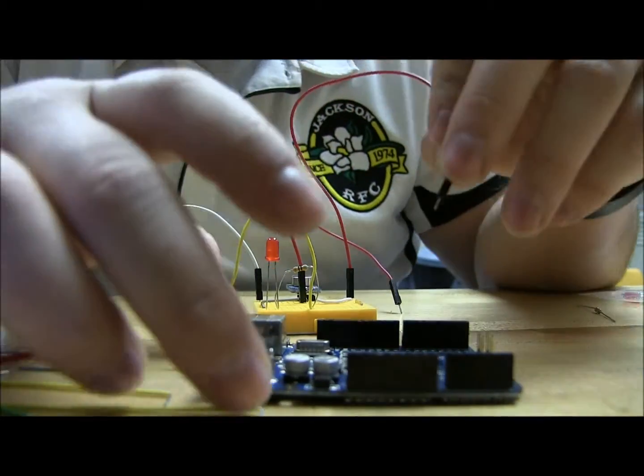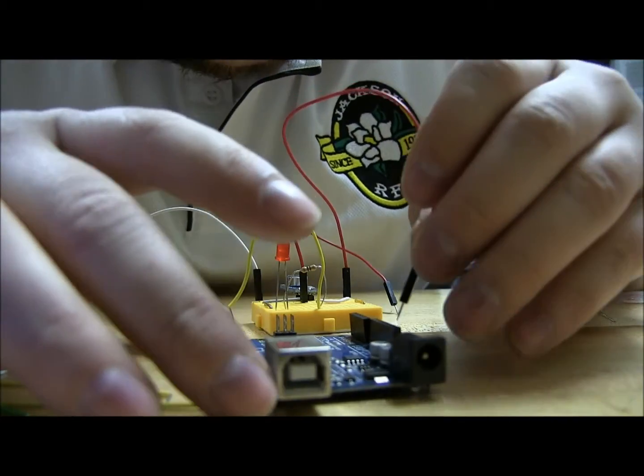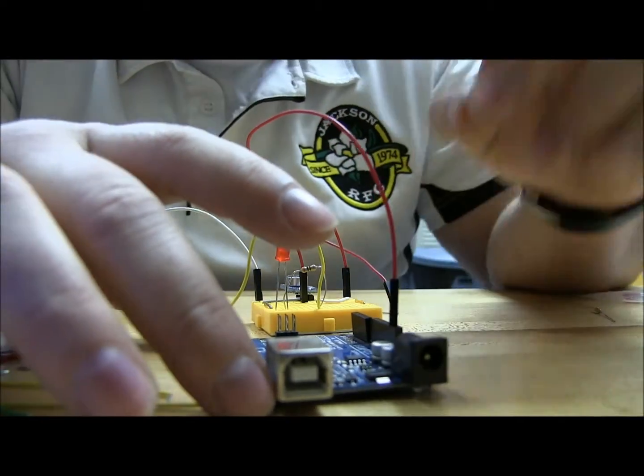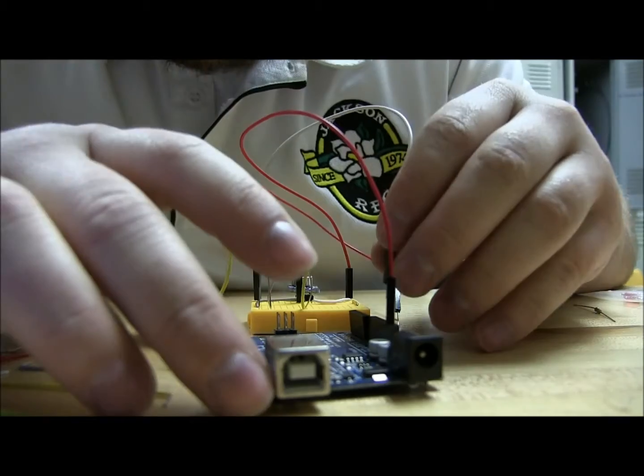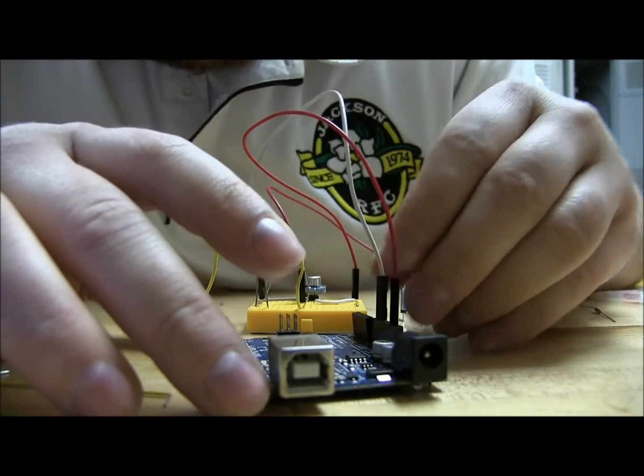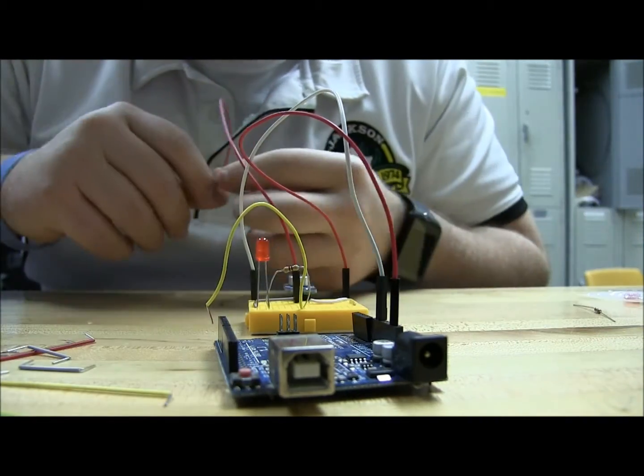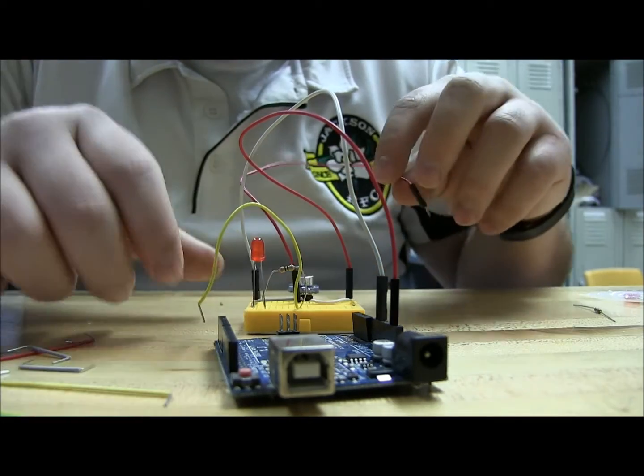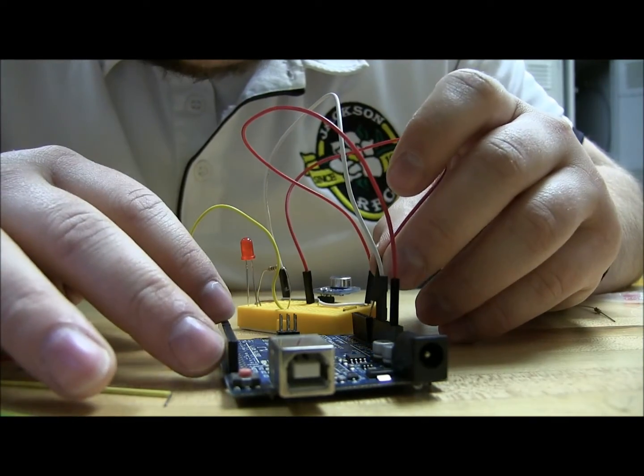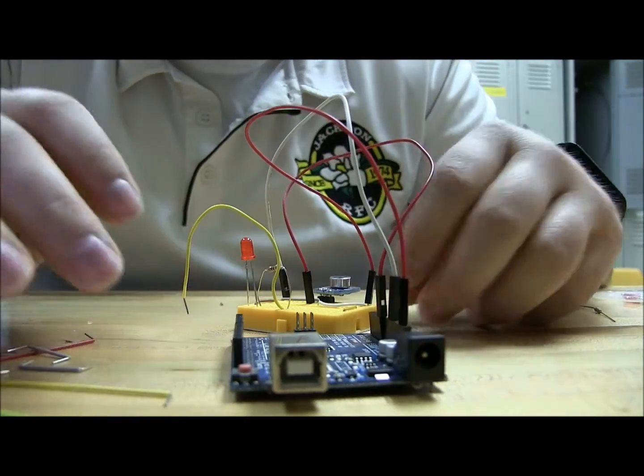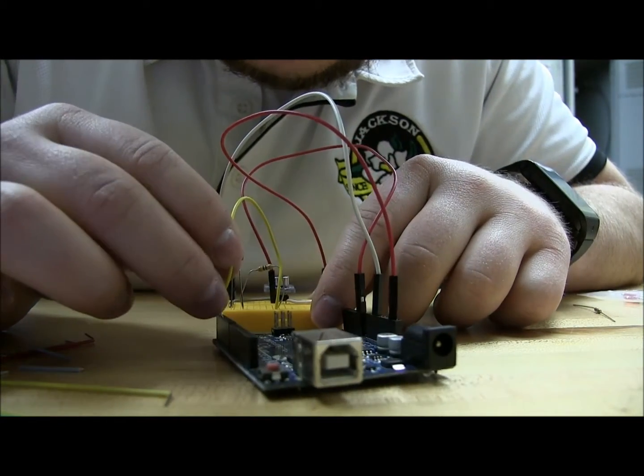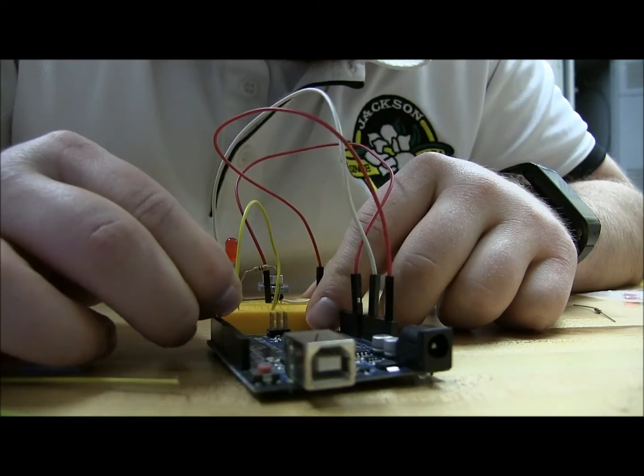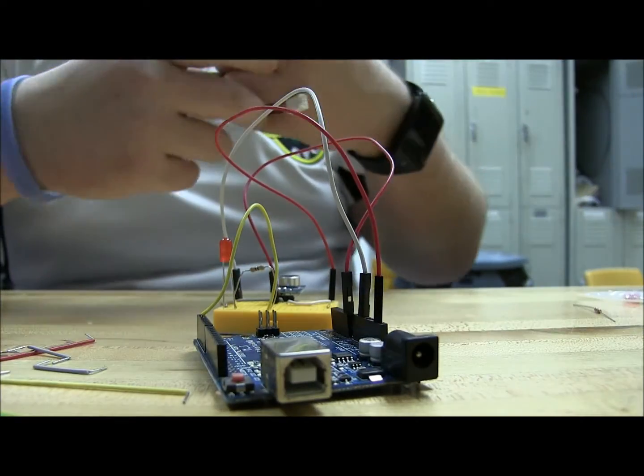So, first things first, the five volts pin goes into there. Ground pin right beneath it to the ground. Our out from our microphone goes into analog end, A0, LED, and the pin two on the digital side,